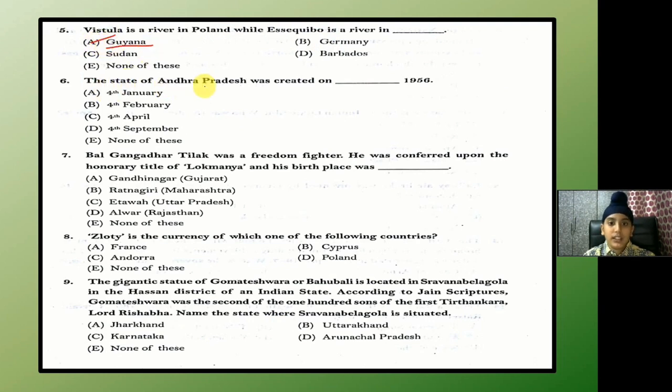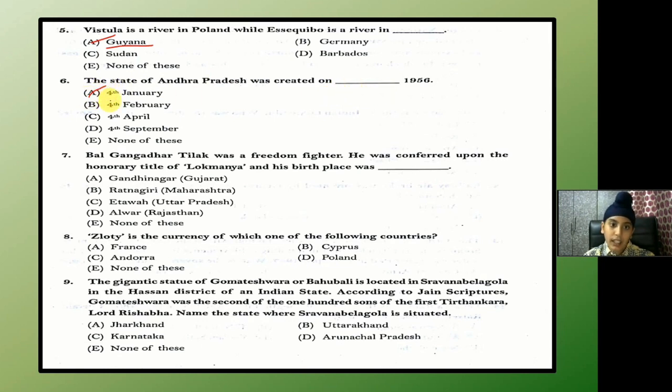The state of Andhra Pradesh was created on which date in 1956? The answer is A — 1st November 1956.